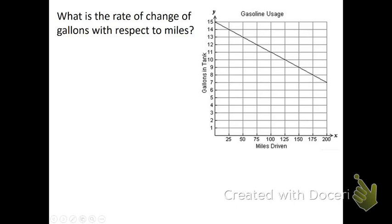So this first problem gives us a graph and asks what is the rate of change of gallons with respect to miles. Now the first thing I want us to do is find the slope and interpret it, but this wording here is a little bit different than what we've seen, this phrase with respect to. You will often see slope defined as the change in y with respect to x.